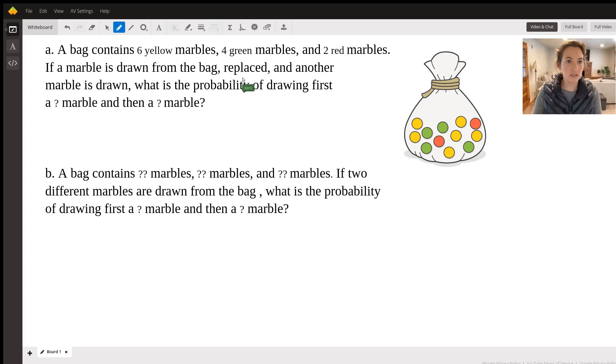And let's say that they asked us for the probability of drawing first a red marble and then a green marble. Okay, so how we would do this question.